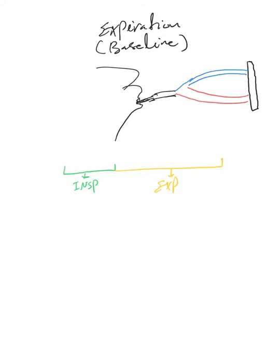Okay, now we finished talking about inspiration. Let's talk about expiration. As we said before, expiration is a passive process, which means it doesn't consume energy, compared to inspiration which is an active process that requires muscle contraction and consumes energy.